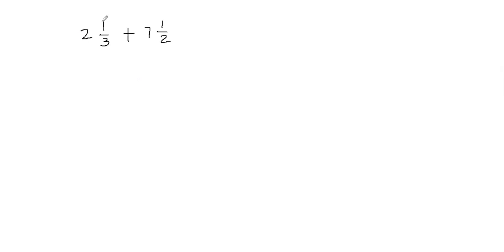The first thing we're going to do is convert the mixed fractions into fractions. To convert the first mixed fraction, we multiply the whole number with the fraction's denominator. So 2 times 3 gives me 6, and then you add that to the numerator. 6 plus 1 gives me 7, so I'll write 7 in the numerator, and we don't change the denominator — the denominator stays 3.